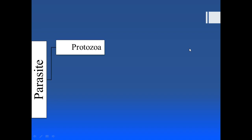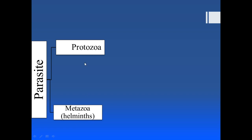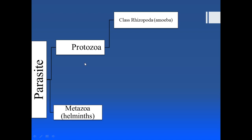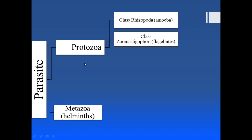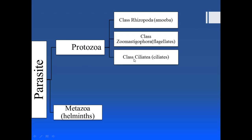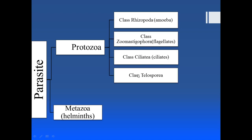First, a brief overview of the previous video. We divided the parasites on the basis of cellularity into two groups: protozoa and metazoa. Protozoa are unicellular organisms whereas metazoa are multicellular organisms. We then divided the protozoa on the basis of their organelle of locomotion into class Rhizopoda, which have pseudopodia; Zoomastigophora, which have flagella; class Ciliata, which have cilia; and class Telospora, which don't have any organelle of locomotion.